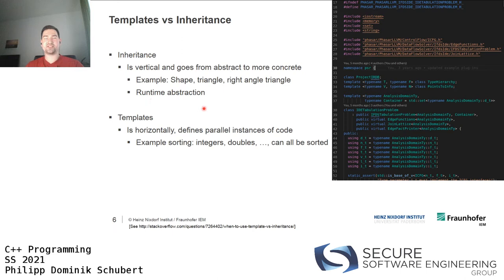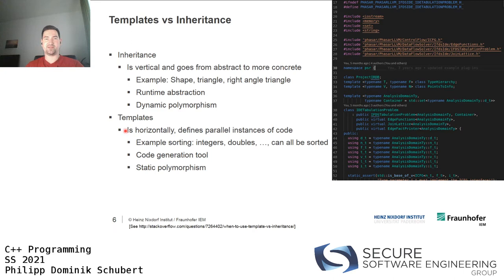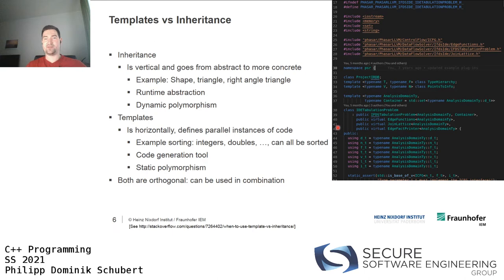Inheritance is a runtime abstraction: polymorphic call sites know what function to call at runtime by looking it up in the virtual function table — that's dynamic polymorphism. Templates are a code generation tool — that's static polymorphism. Both approaches are orthogonal and can be used in combination, as shown in the example on the right-hand side.